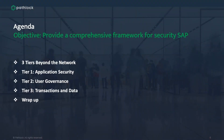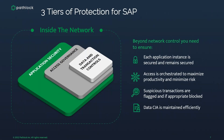We're going to provide a comprehensive framework for security for SAP. The things we will cover today are three tiers beyond the network: Tier 1 — application security; Tier 2 — user governance; Tier 3 — transactions and data; and then a wrap-up. Let's dive in because we have a lot to cover in a relatively short period of time.